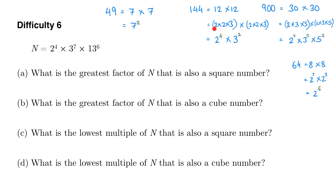When you've got a square number and you write it as a product of prime factors, you end up with even indices. That's because whatever you've got in the prime factorization of just the square root, you end up having that again, so you effectively double whatever indices you've got. In the case of 64, you've got 2 to the power of 3 multiplied by 2 to the power of 3. 3 is odd, but when you multiply them together you have twice as many twos, giving an even index - in this case 6.